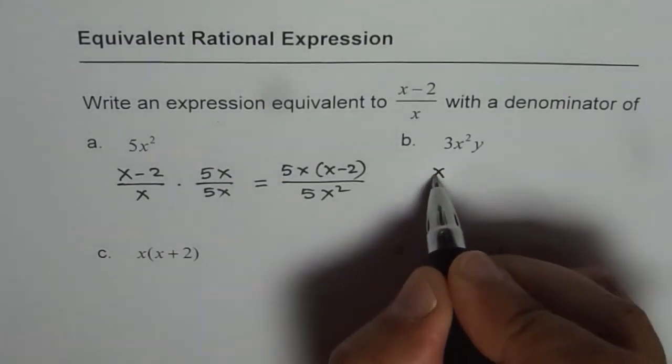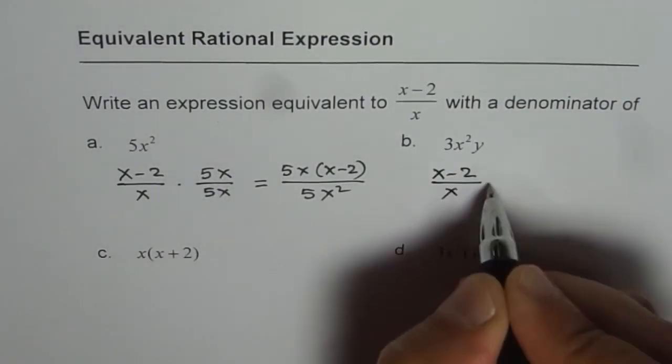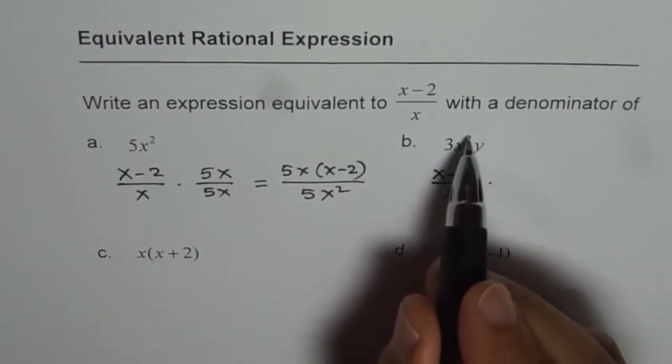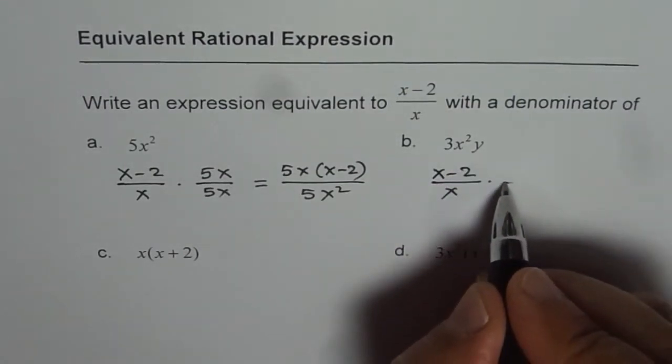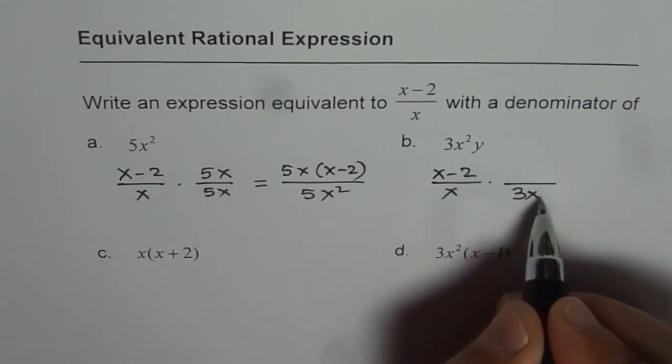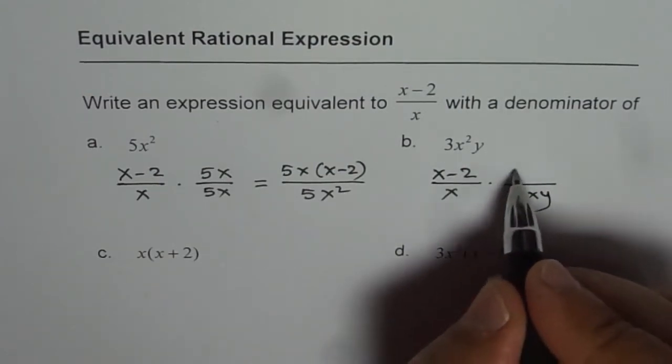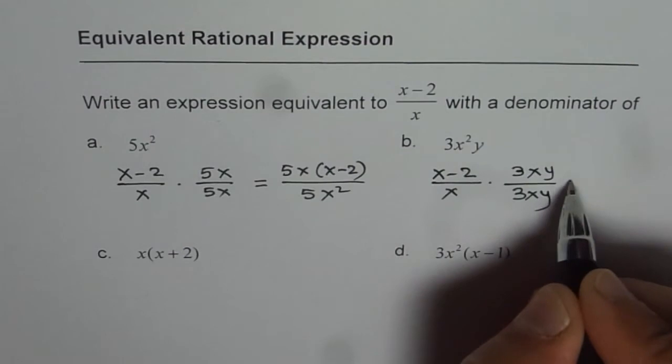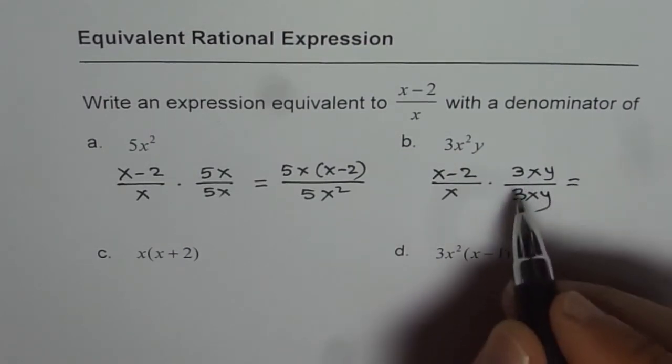Here again, we will start with x minus 2 over x. What we need is 3x squared y in the denominator. We already have just x here, so we need to multiply this by 3xy. The numerator should also be multiplied by the same monomial, 3xy.